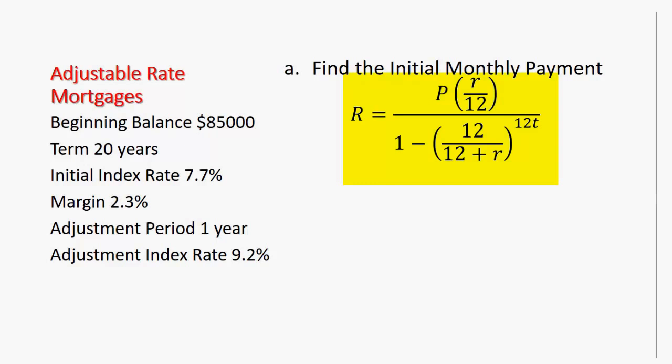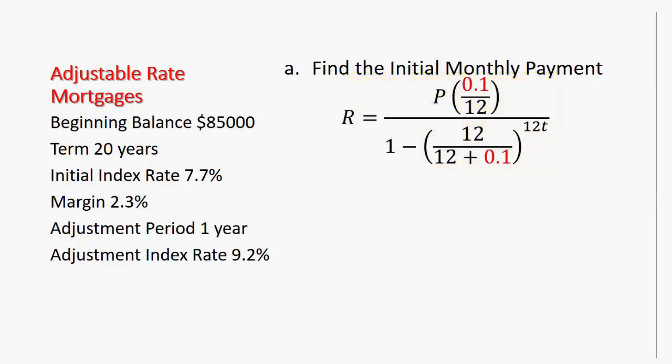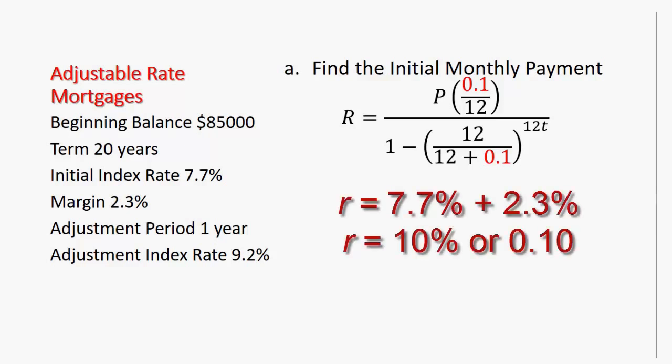You may notice that in other YouTube videos a different version of this formula is used, and that shouldn't discourage you. It'll work the same way. So the interest rate, little r, as we already mentioned, is going to be the sum of 7.7% plus 2.3%, which gives us 10%, but in decimal form. So I've replaced little r with 0.1.